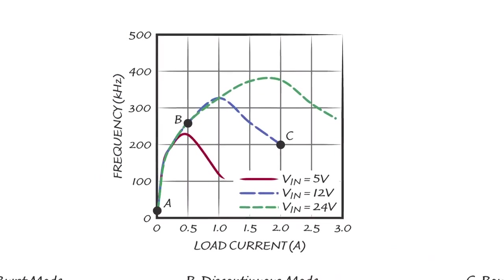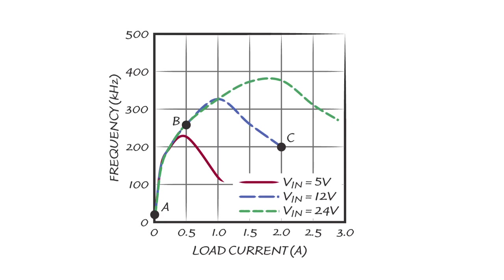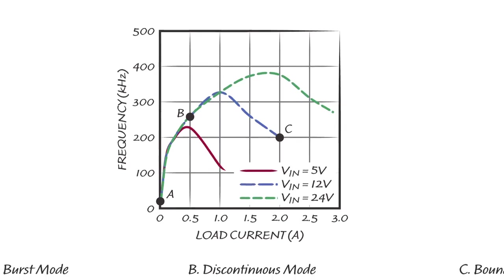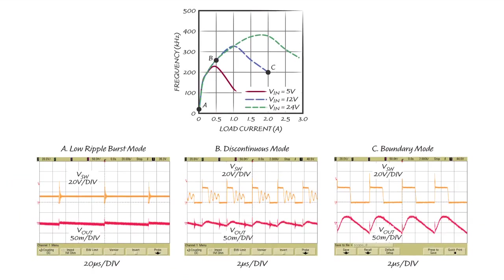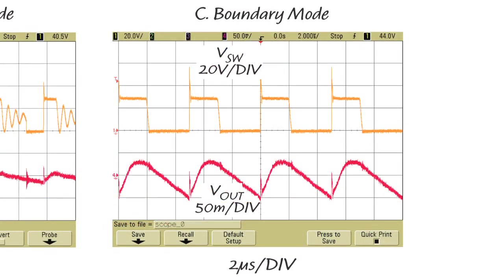The top graph shows the switching frequency versus load current at three different input levels. The bottom scope shots show the waveforms at three operating points. At point C, with 2A load current, the LT8302 works in quasi-resonant boundary mode, in which the primary switch turns back on when the secondary current goes to zero and the switch voltage rings to its valley. At point C, when the load decreases, the primary switch current limit decreases, but the switching frequency first increases and then decreases when it gets into discontinuous mode.